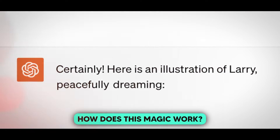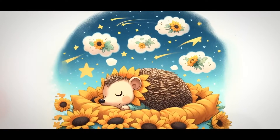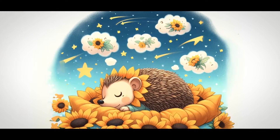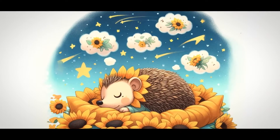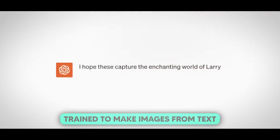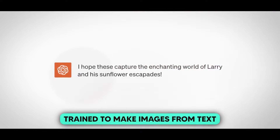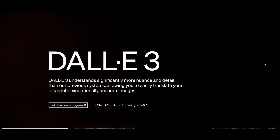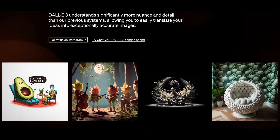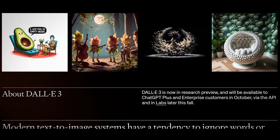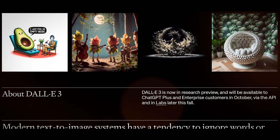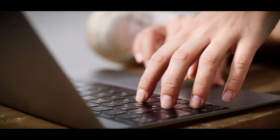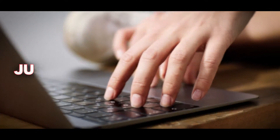So how does this image generation work? DALL-E 3 is a super smart model with 12 billion parameters, trained to make images from text. It learns from a large dataset of text and image examples, so it knows how to bring your words to life. You don't have to be a tech wizard to use it — just type in a simple sentence and DALL-E 3 does the rest.